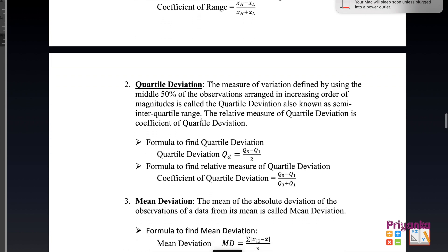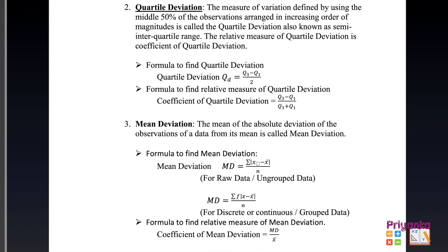The second method is quartile deviation: the measure of variation defined using the middle 50% of the observations, arranged in increasing order of magnitudes, is called quartile deviation, also known as semi-interquartile range. Its relative measure is the coefficient of quartile deviation. The formula is Q3 minus Q1 divided by 2, and the coefficient of quartile deviation is Q3 minus Q1 upon Q3 plus Q1.